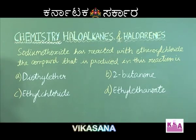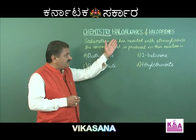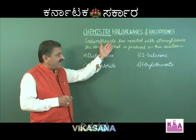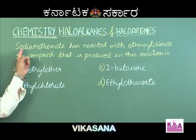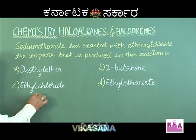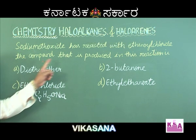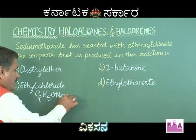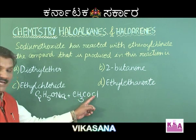The next question: sodium ethoxide reacts with ethanoyl chloride. The compound produced is — option A: diethyl ether; option B: 2-butanone; option C: ethyl chloride; option D: ethyl ethanoate. It is better to write the reaction. Sodium ethoxide is C2H5ONa, and ethanoyl chloride (an acid chloride) is CH3COCl.